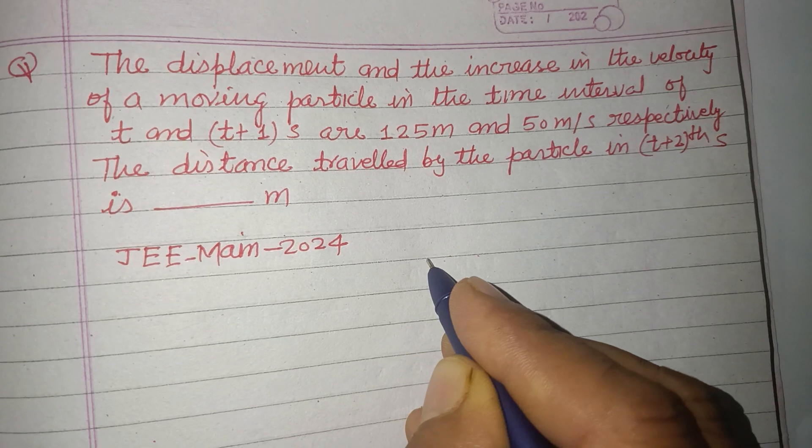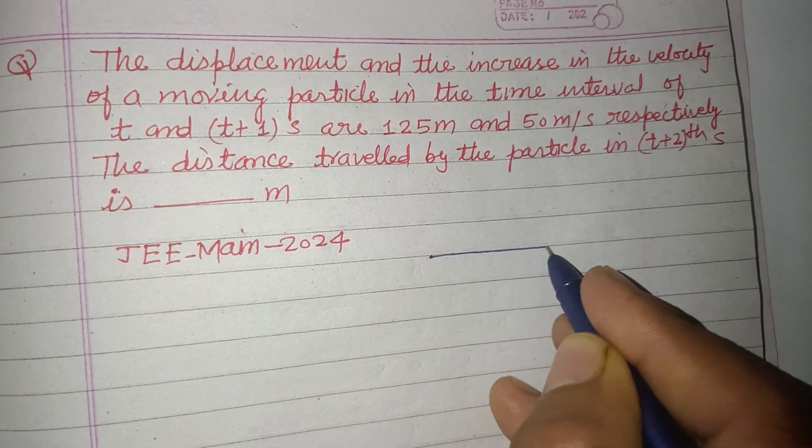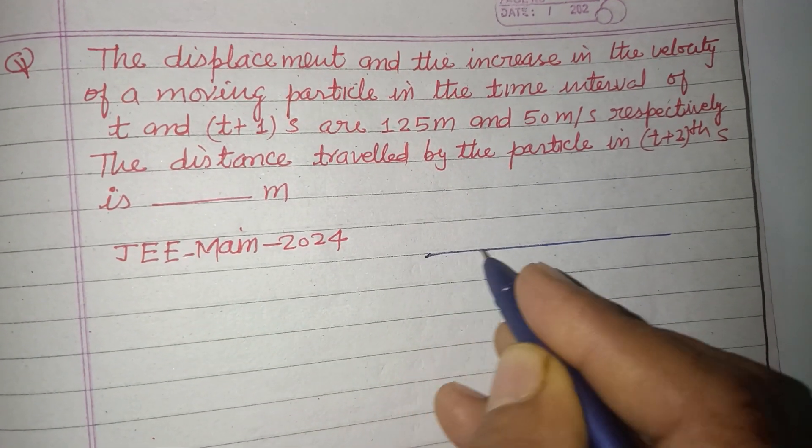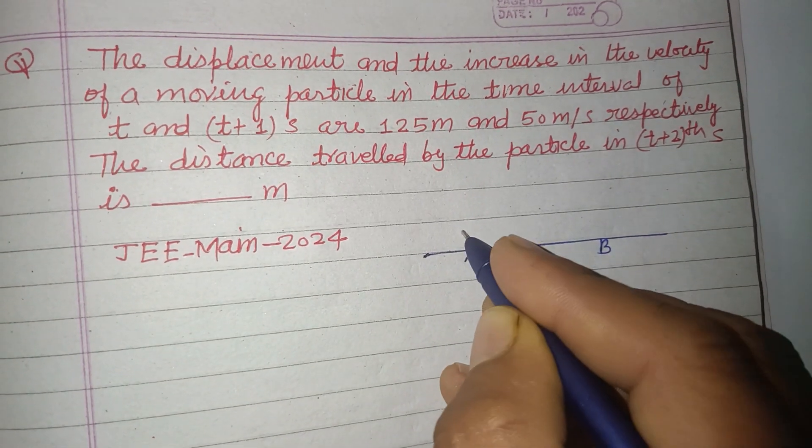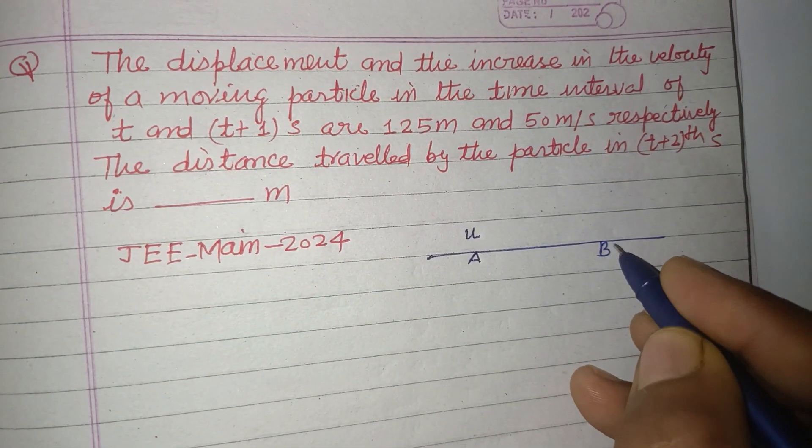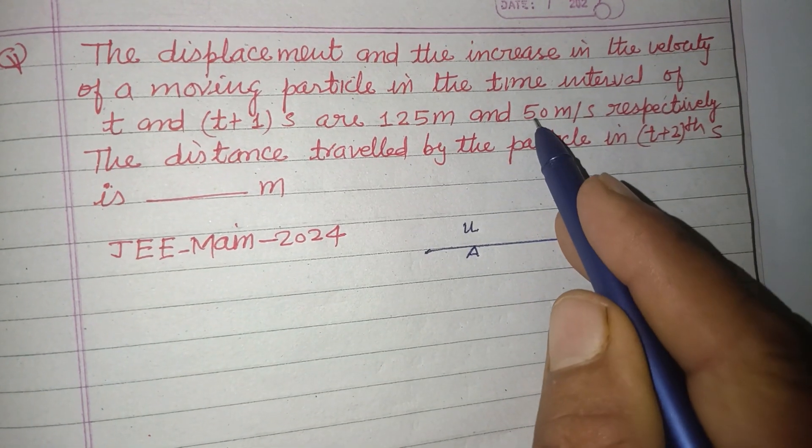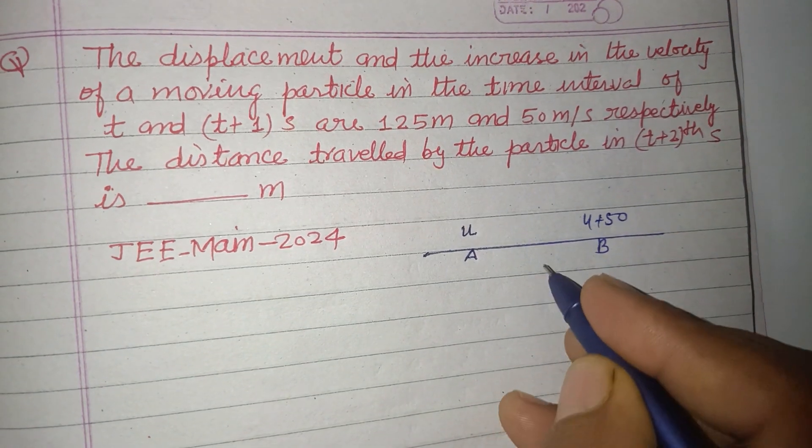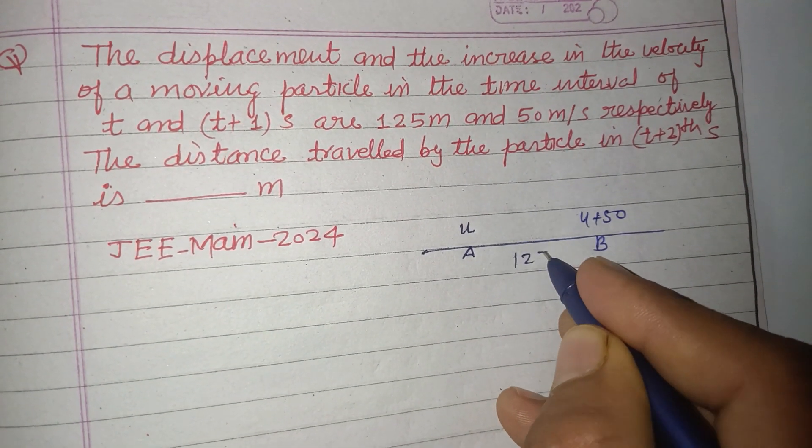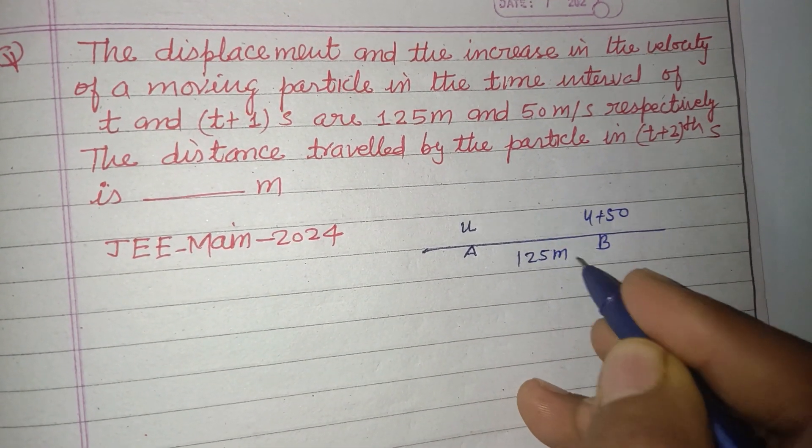The question is saying that the particle is starting from point A and here is point B. Its velocity is u here and its change in velocity is 50, so this is u plus 50. The displacement in this section is 125 meters.